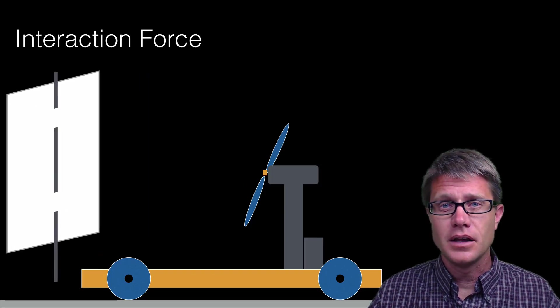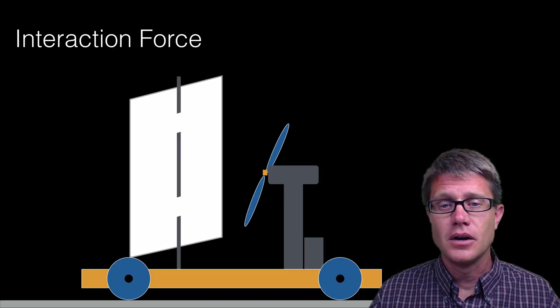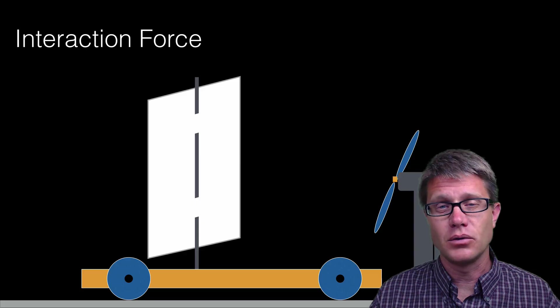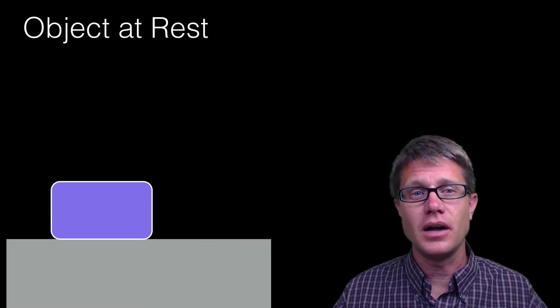If we want to get it to move we have to remove one of those objects. If we remove the sail the wind is going to push against the cart and the cart is going to move to the right. Or if we leave the sail attached and move the fan to the right the whole thing is going to move to the left. We have to have that external object.